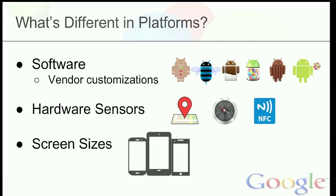We tried to identify exactly what's different about a lot of these platforms. For Android specifically, we're talking about vendor customizations — everyone wants to re-theme it, and that causes issues. There are also differences in the sensors being used across all these devices. And screen size is a big thing — everyone has their own resolution that they think is perfect.